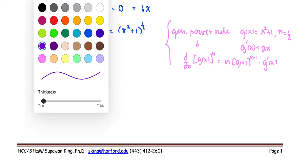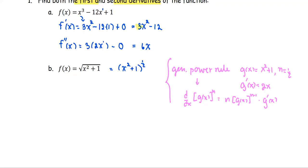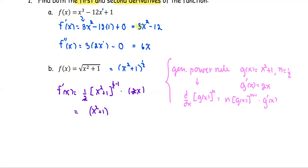Applying this to the problem: x squared plus 1 is g, and n is one-half. So f prime equals one-half times the quantity x squared plus 1, all to the power one-half minus 1, multiplied by g prime which is 2x. Simplifying, the 2s reduce, giving us the quantity x squared plus 1 to the power negative one-half, multiplied by x. We write this as x over the quantity x squared plus 1 to the power one-half. This is our first derivative.